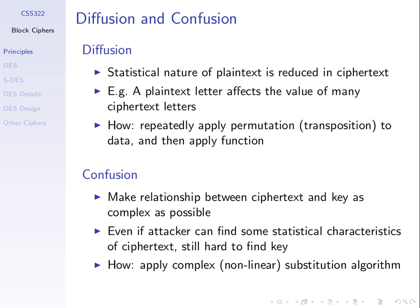How do you achieve diffusion? By transposition — repeatedly doing a transposition, rearranging letters, then applying some function on those letters. Take the letters on the input, rearrange them, apply some substitution function, and keep repeating. The idea is that by changing one letter on the input, multiple letters on the output will change.